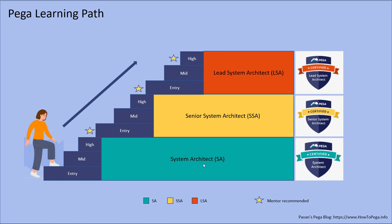In short, system architects are junior developers with hands-on ability to configure things in PEGA. Once they gain proficiency across most modules they are eligible for high-end SA. From high-end SA to entry-level SSA, mentoring for at least a couple of months is recommended because that role transition is very important. From entry-level SSA, they move to mid-level, and once they become expert — usually it takes at least two to three years to master the SSA role at a bare minimum.